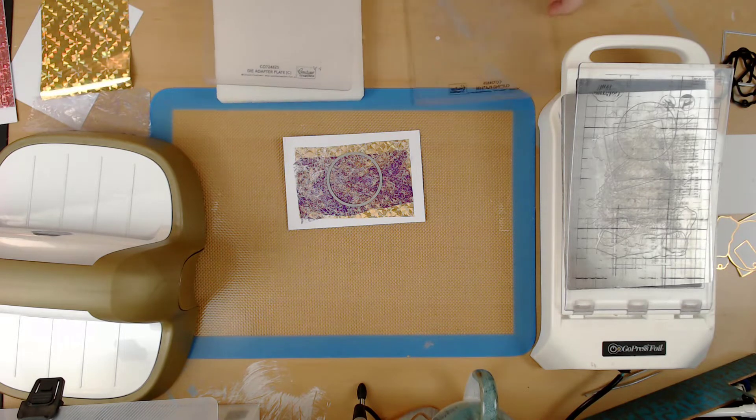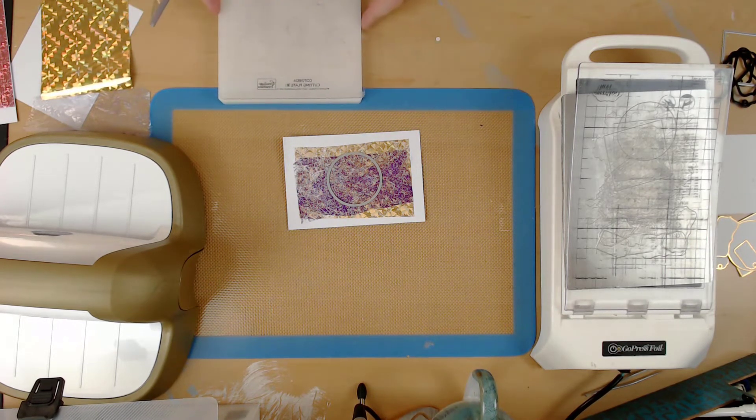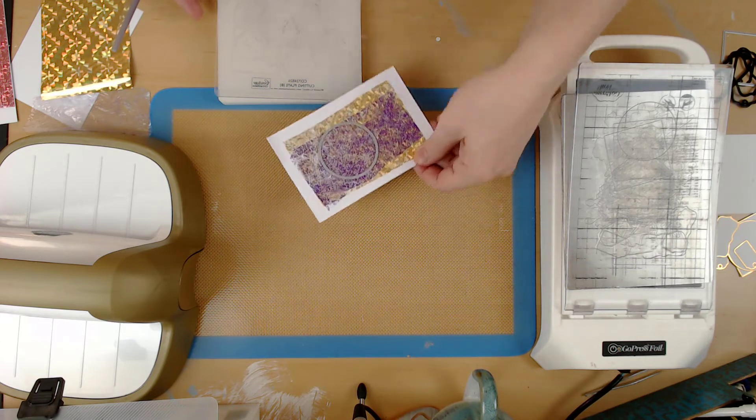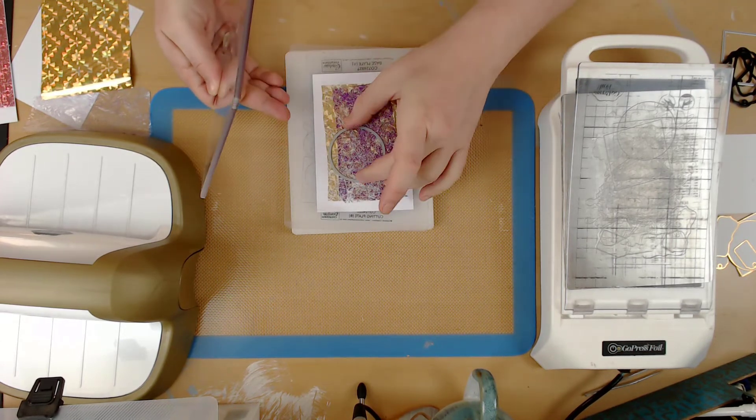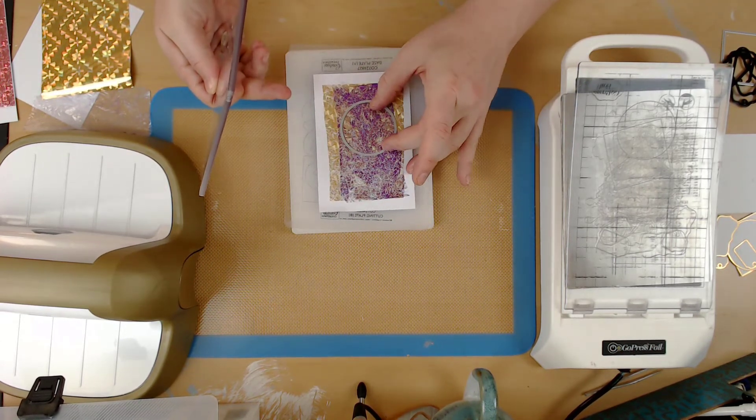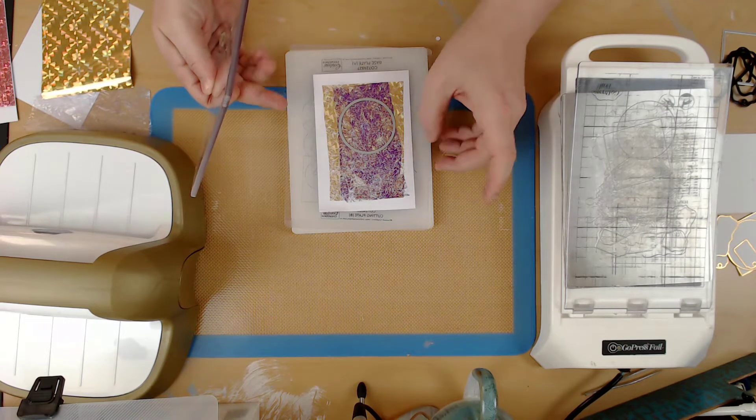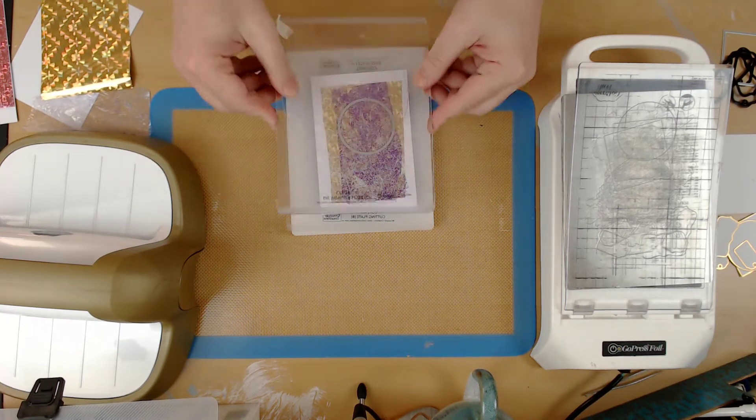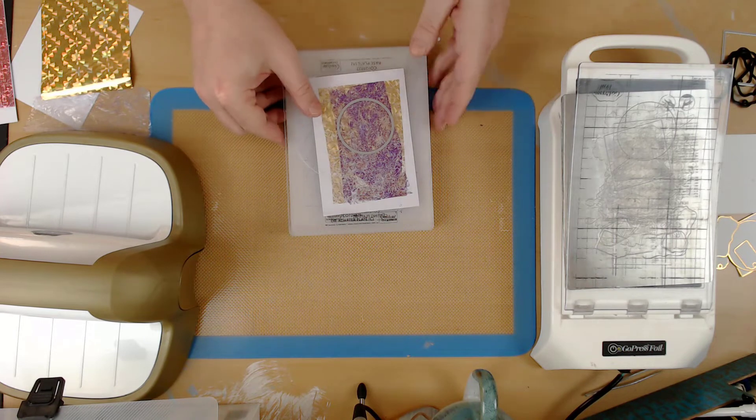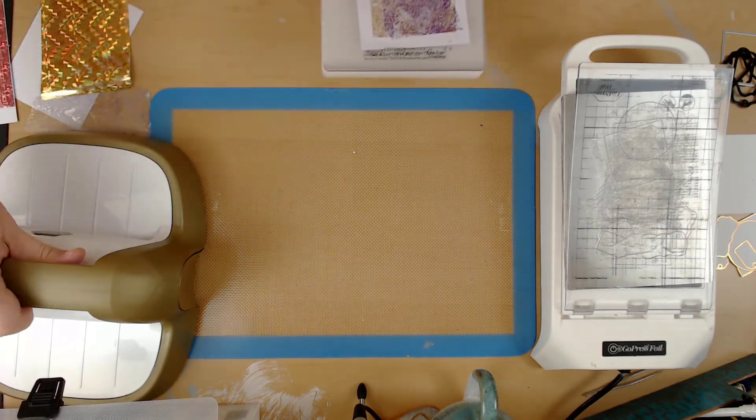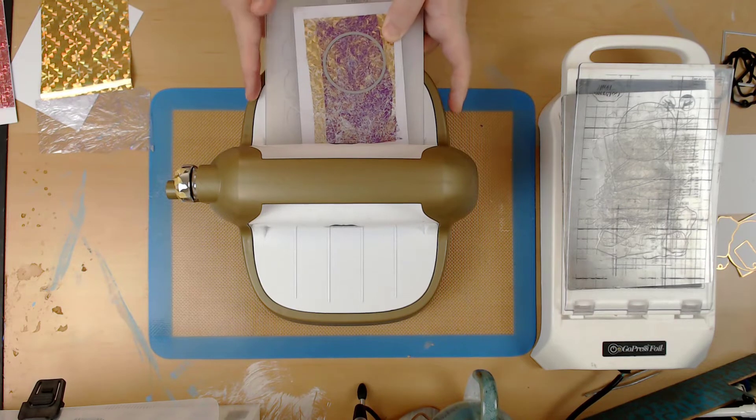While I have the die cutting machine out, I may as well cut a section of this so that you can get a better idea of how it would look when you die cut something like this out. Just a regular sandwich for thin metal cutting dies, and then I will whiz that through the die cutting machine.